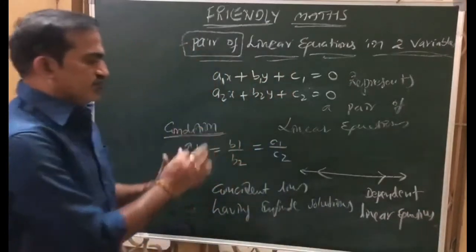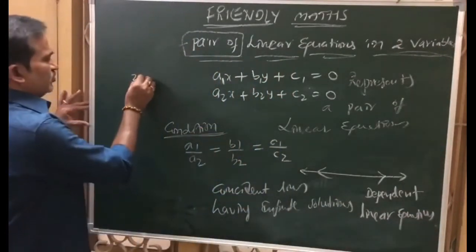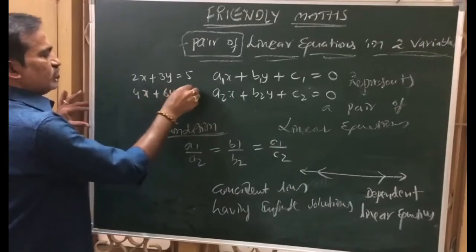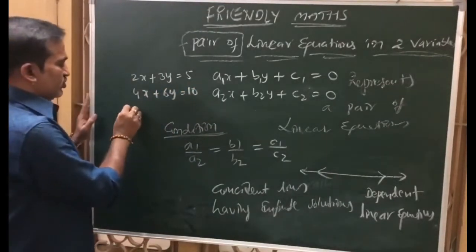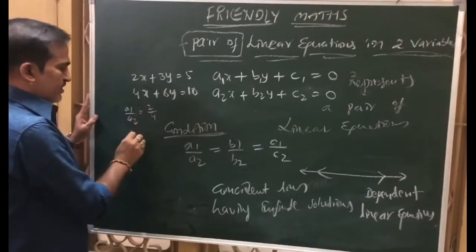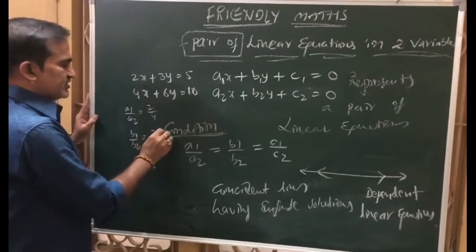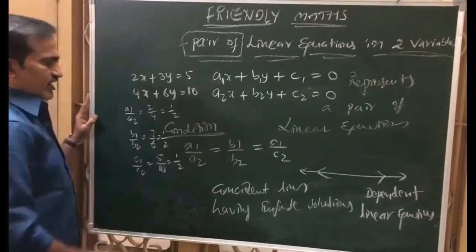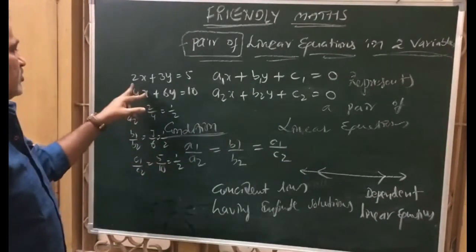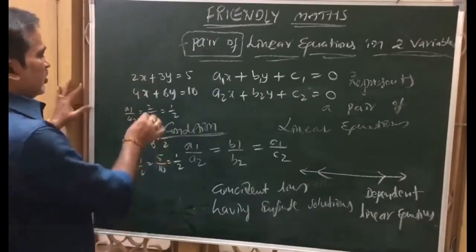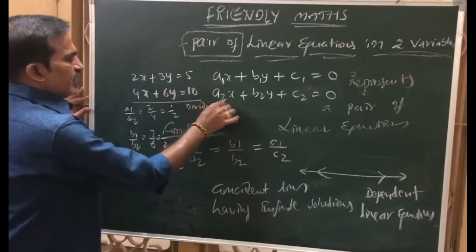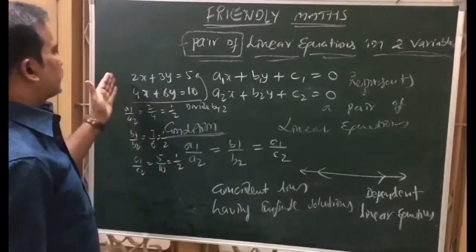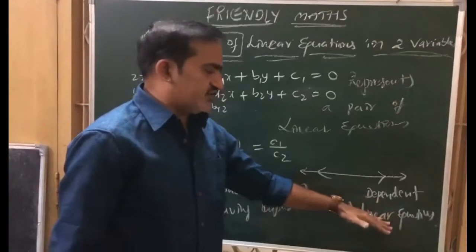Actually, in the case of coincident lines, these are not two different equations. For example, 2x plus 3y is equal to 5 and 4x plus 6y is equal to 10. Then a1 by a2 is 2 by 4, which is 1 by 2. b1 by b2 is 3 by 6, also 1 by 2. And c1 by c2 is 5 by 10, also equal to 1 by 2. All ratios are equal. If you divide the second equation fully by 2, you get the same equation. One is a multiple of the other — that is why these are called dependent linear equations.